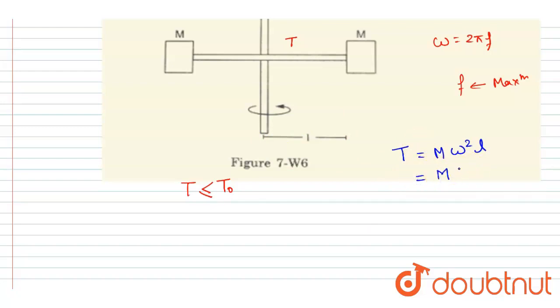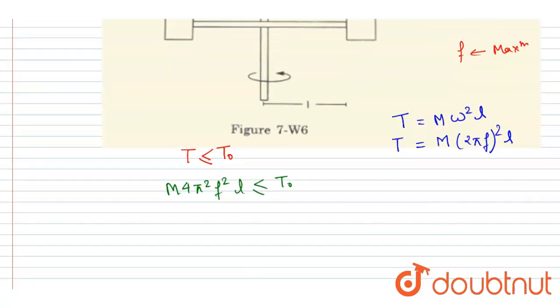So I will write m times 2 pi f squared times l equals T. Now see this inequality: T should be less than equals to T naught. So just put the value of T here. You will write m 4 pi square f square l should be less than equals to T naught.